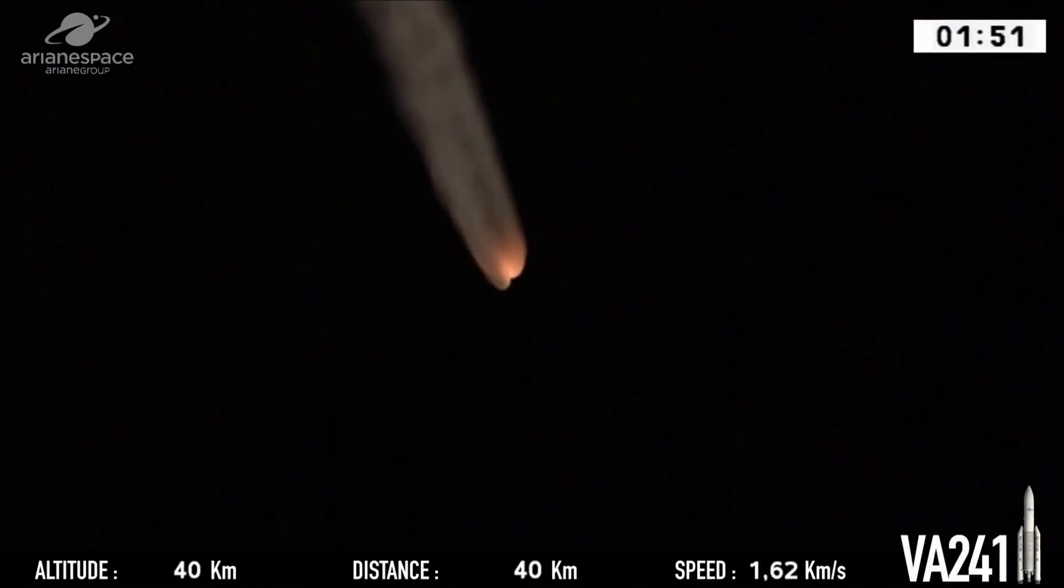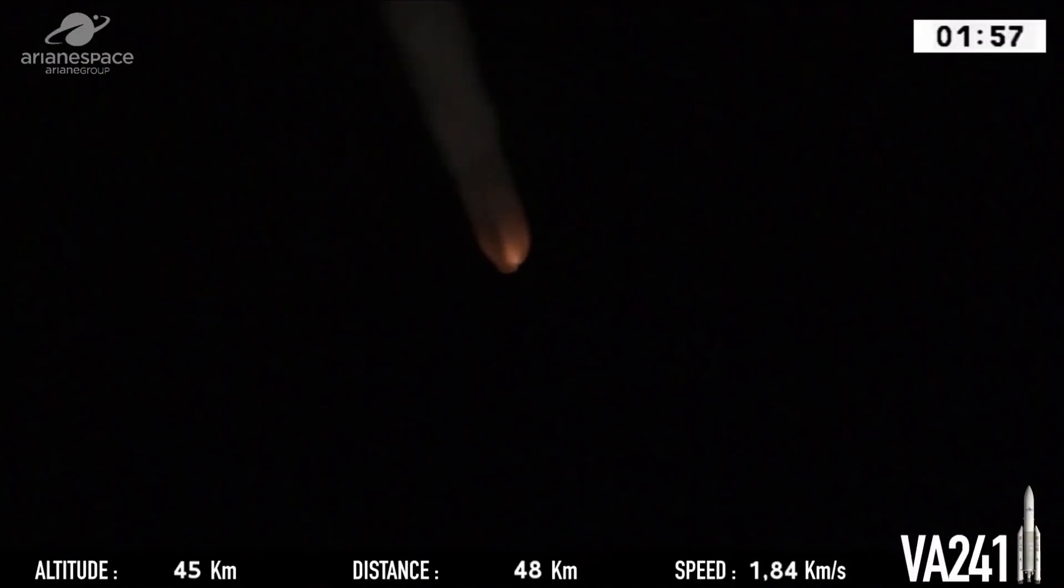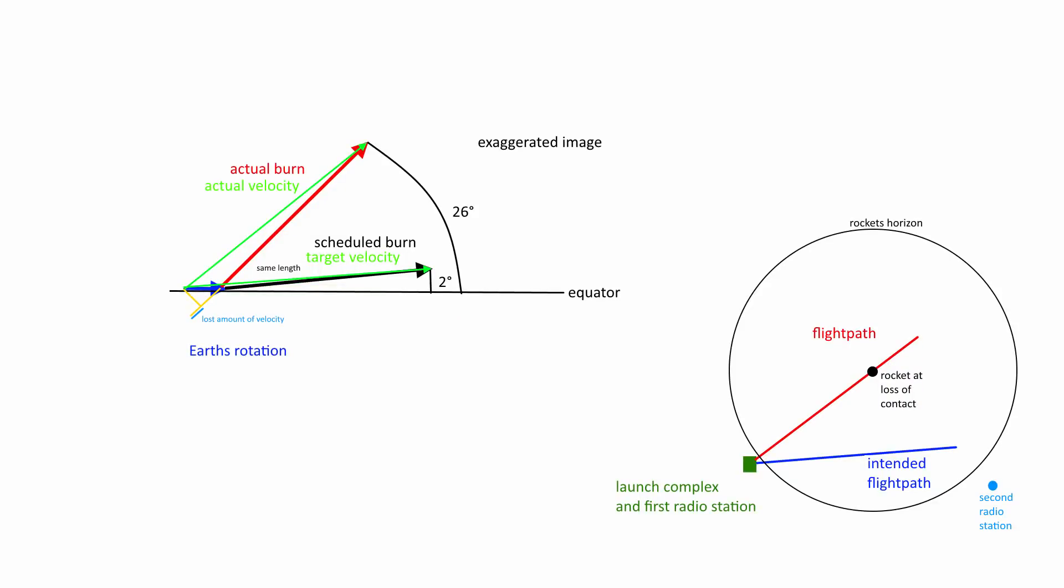What happened next was that the Ariane 5 veered off course and had a too high inclination of more than 20 degrees, rather than the closer to zero degrees which was scheduled, which is usual for a geostationary transfer orbit, because geostationary orbit of course is usually equatorial.